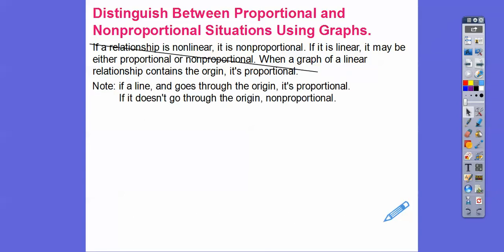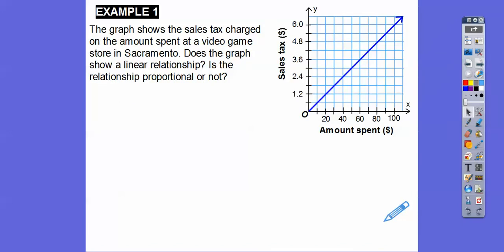All that fancy word just means: if a line goes through the origin, it's proportional. If a line doesn't go through the origin, it's not proportional. So here's a line — can you see this graph is going through the origin? Definitely proportional.